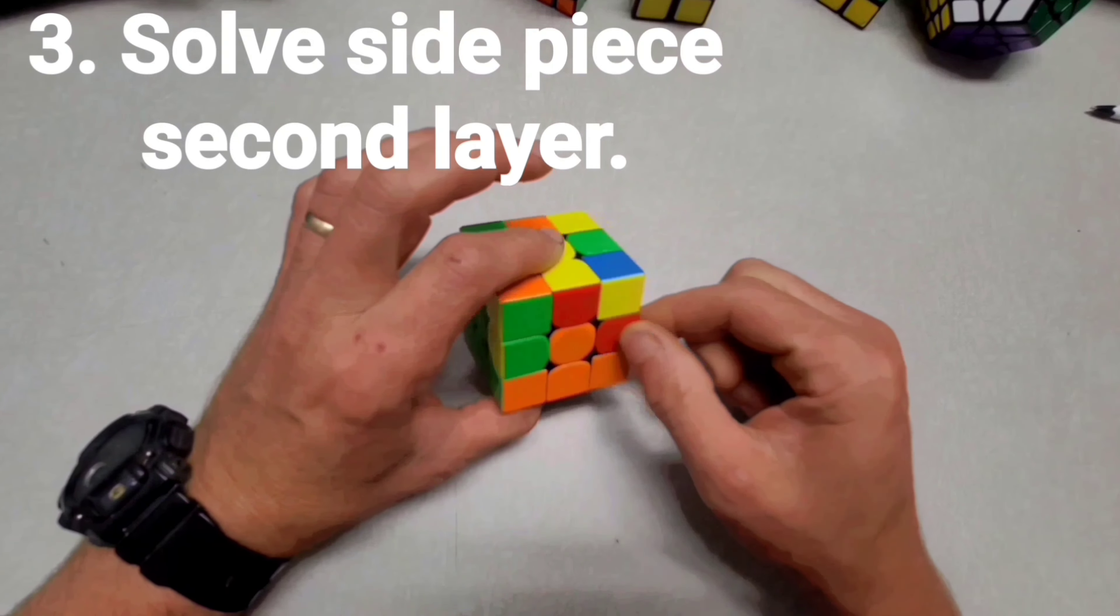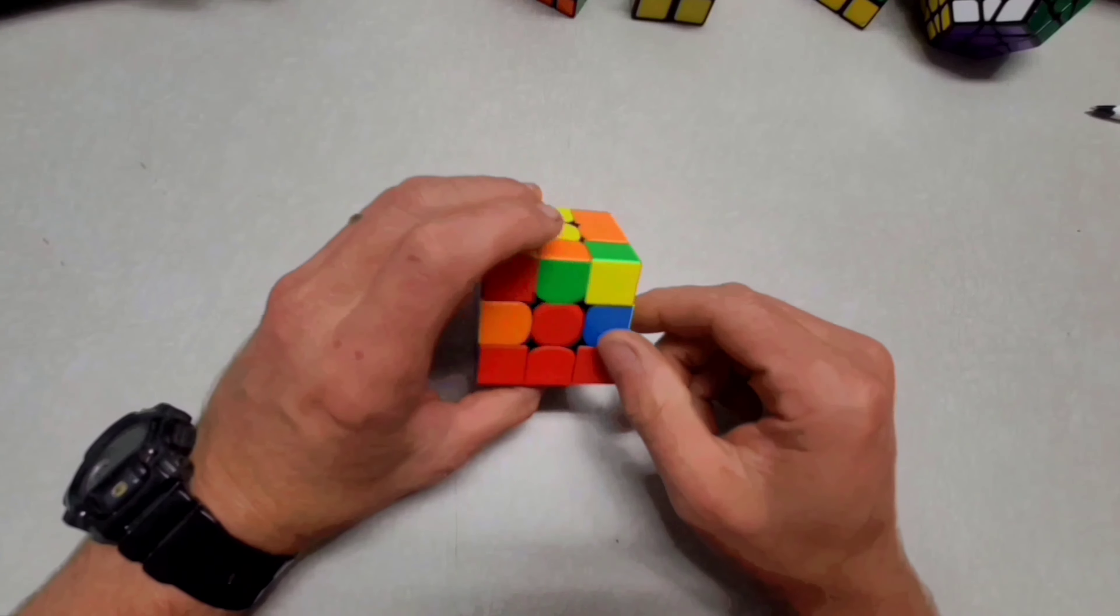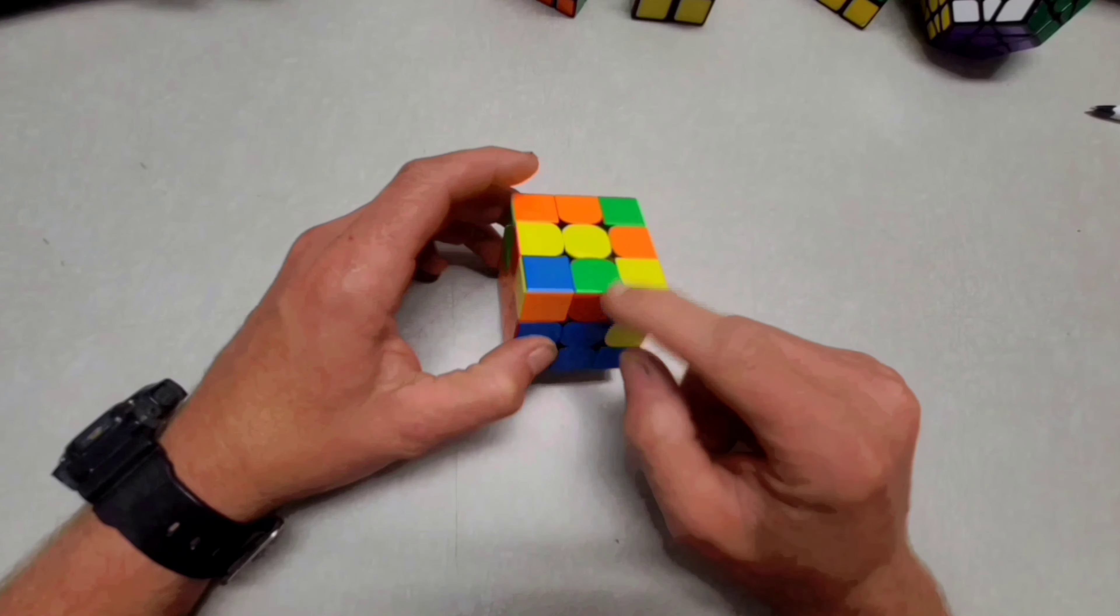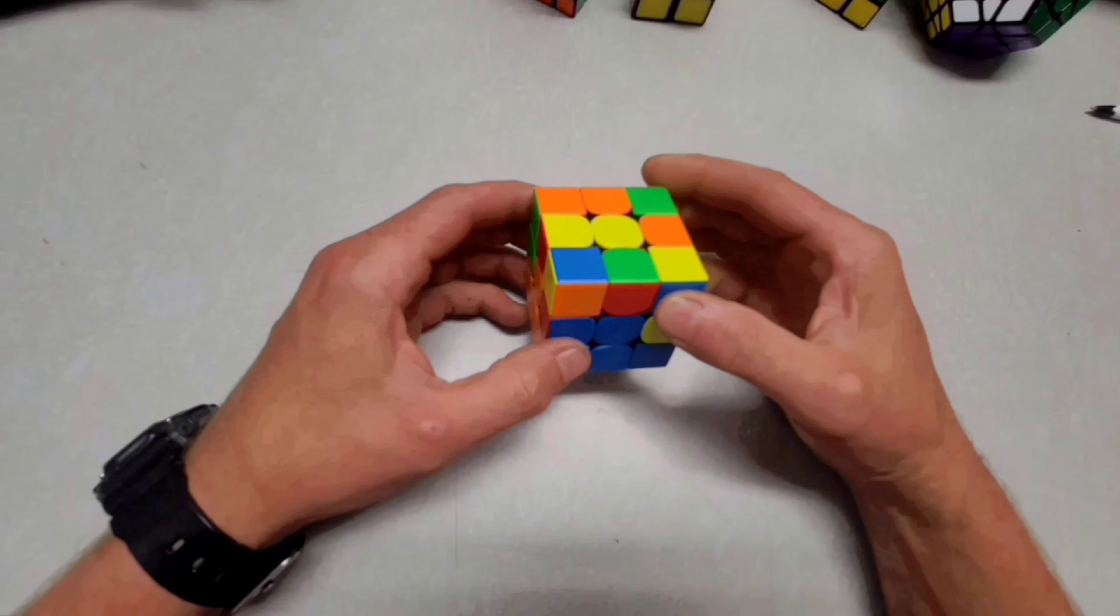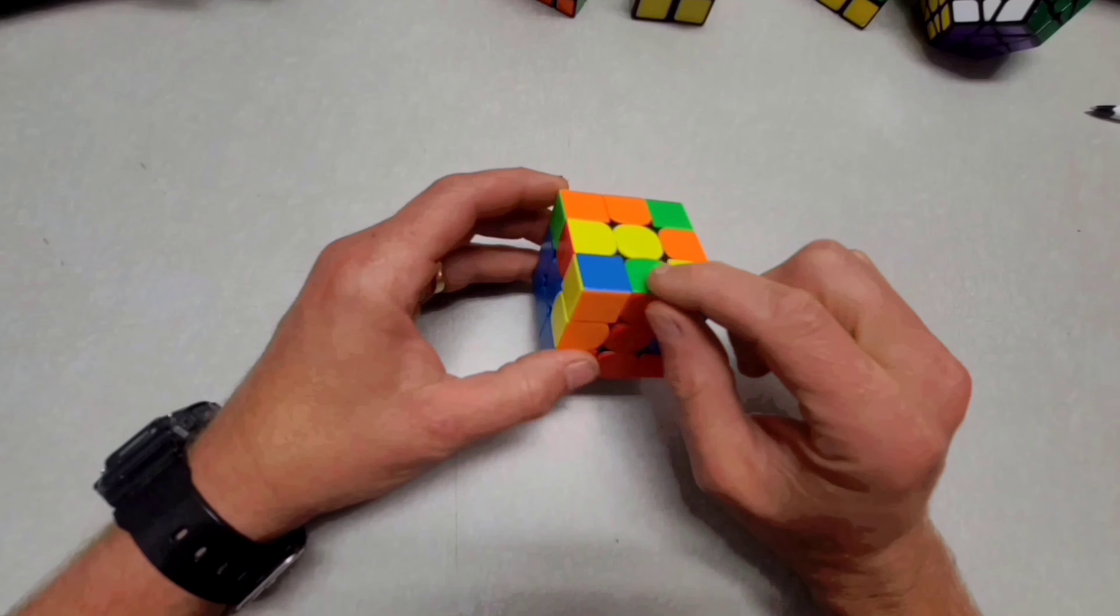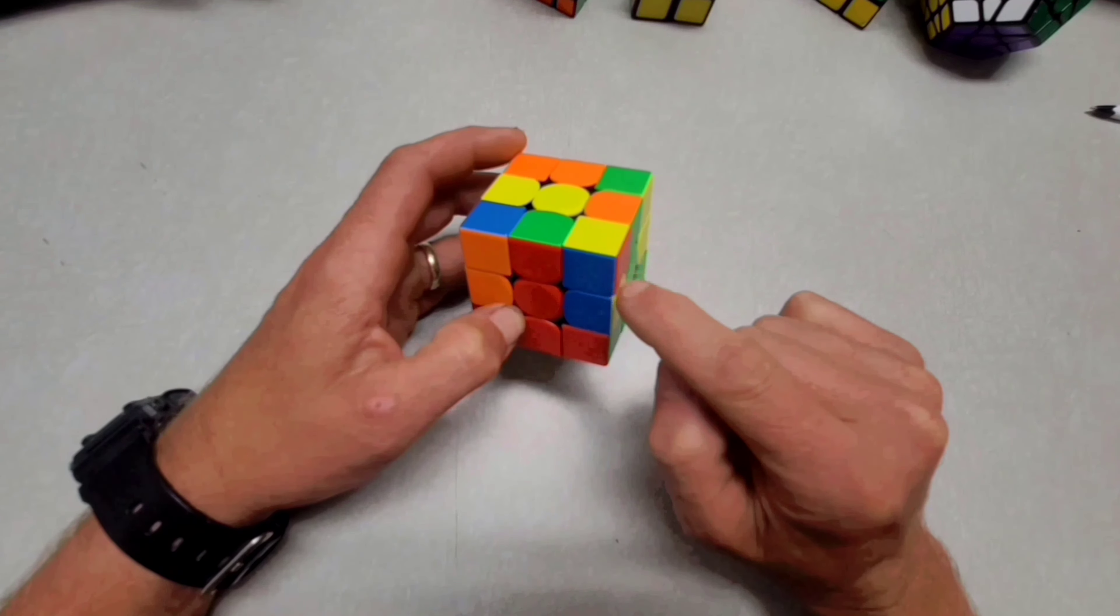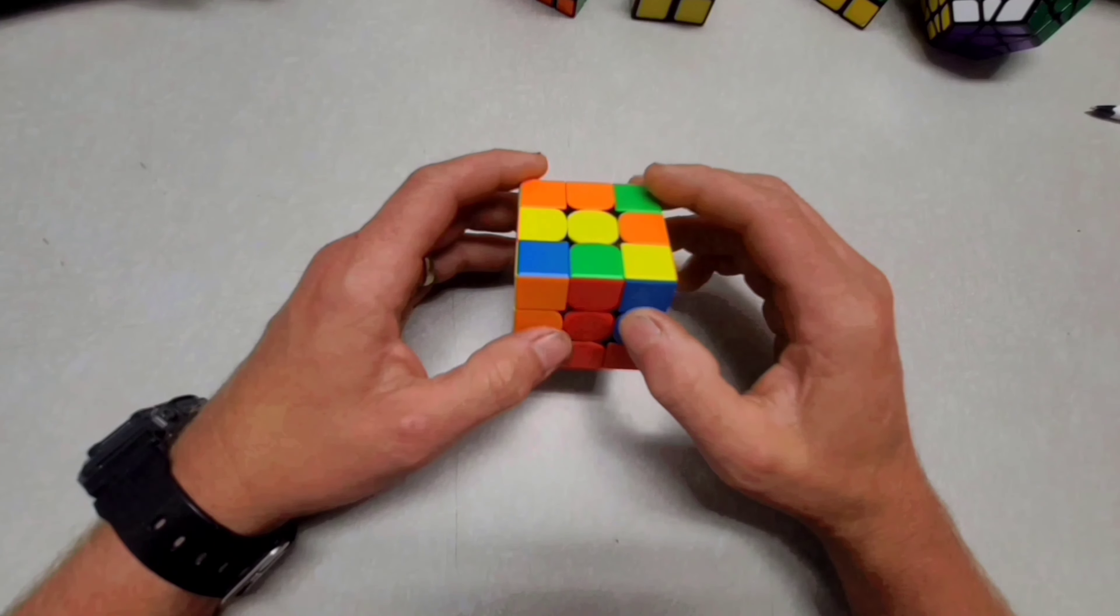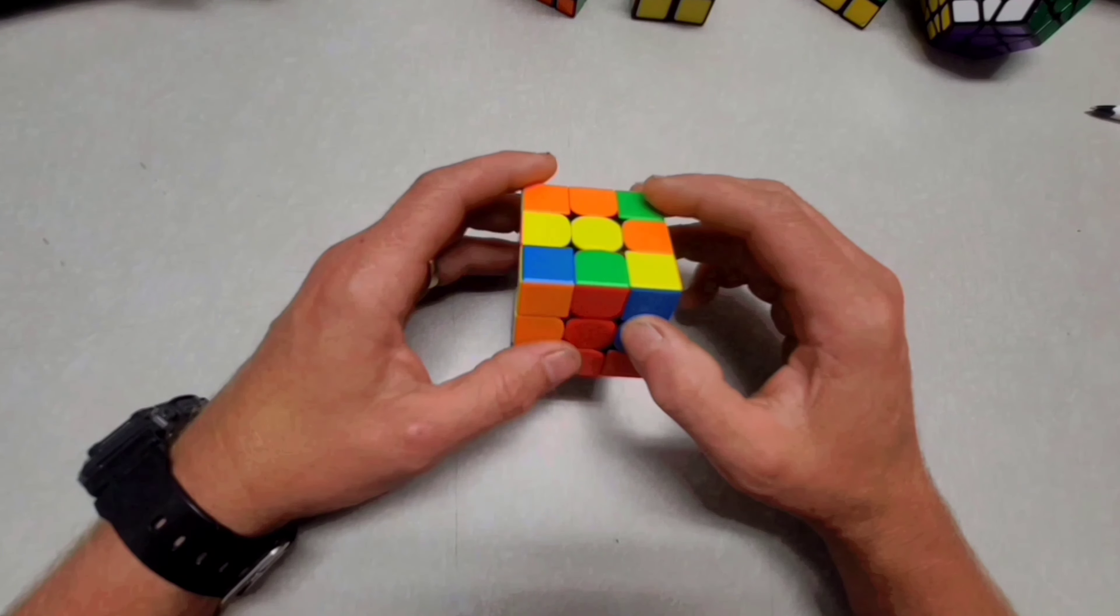Now we're ready to get the second layer. And the second layer, since we've already got the middle, is these little side pieces. So what we're going to do, we're going to look for a piece that doesn't have the yellow in it, because the yellow is always at the top.